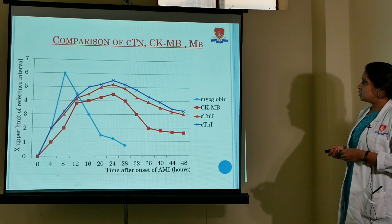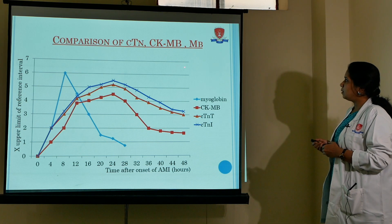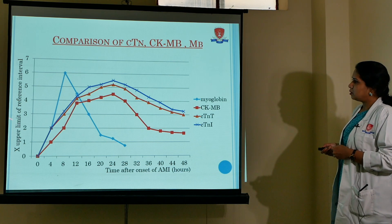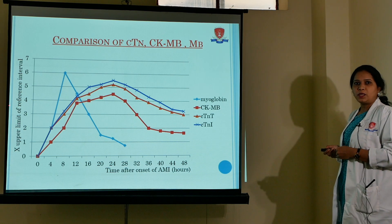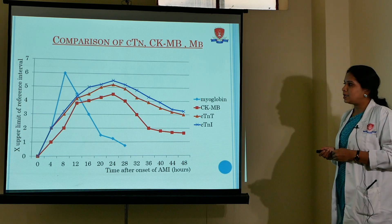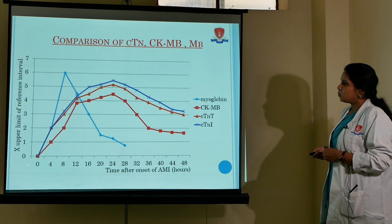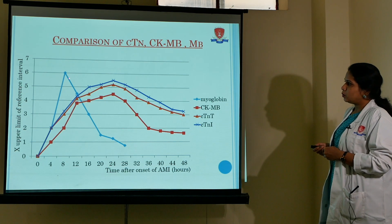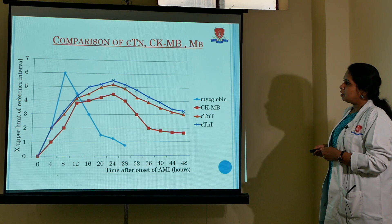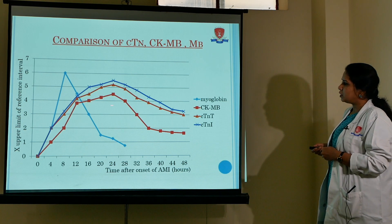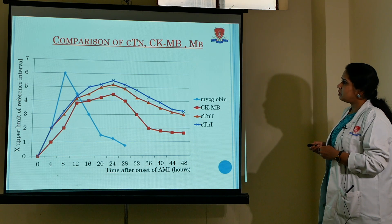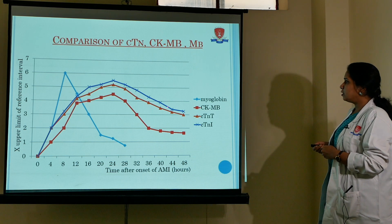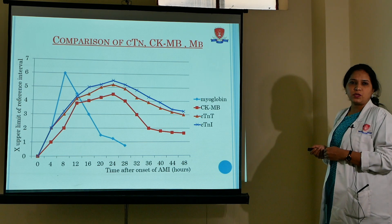This chart again shows the comparison of troponin, CKMB, and myoglobin — a very important chart useful for examinations. Myoglobin rises early and falls early; CKMB rises, reaches peak in 20 to 24 hours, and falls back to normal within 36 hours; troponin rises, reaches its peak, and remains elevated up to 7 to 10 days.